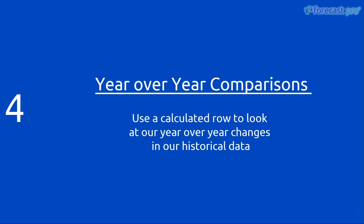In our fourth and final example, we're going to do a year-over-year comparison. We're going to use a calculated row to create a percentage difference from our current forecast to what happened at the same time last year, to look at whether our forecast is growing or declining over time.